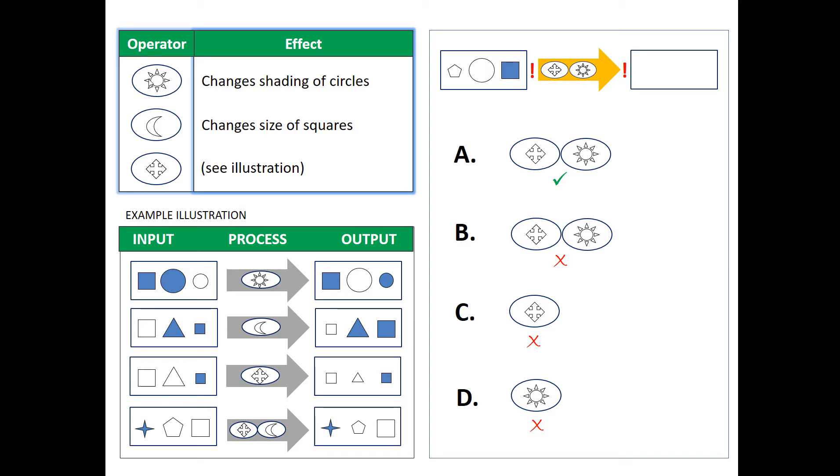For example, the sun shape, as you see, changes shading of circles. So if it's unshaded, it makes it shaded, and vice versa.